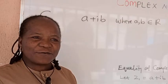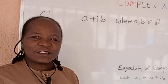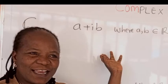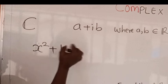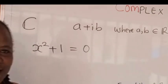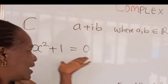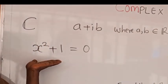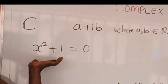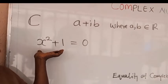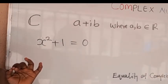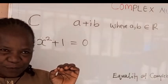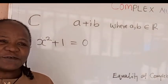The complex number system comes as a result of some unsolved problems in the set of real numbers. For example, in the set of real numbers, a quadratic equation like x squared plus one equal to zero is unsolvable, because trying to solve it you encounter the square root of a negative number, which in the set of real numbers is undefined.